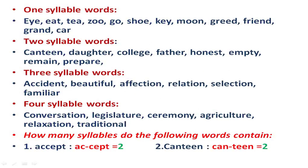Now let's look at examples. One syllable words: I, eat, tea, zoo, go, shoe, key, moon, greed, friend, grand. Two syllable words: canteen, daughter, college, father, empty, remain, prepare. Three syllable words: accident, beautiful, affection, relation, selection, familiar. Four syllable words: conversation, legislature, ceremony, agriculture, relaxation, traditional.